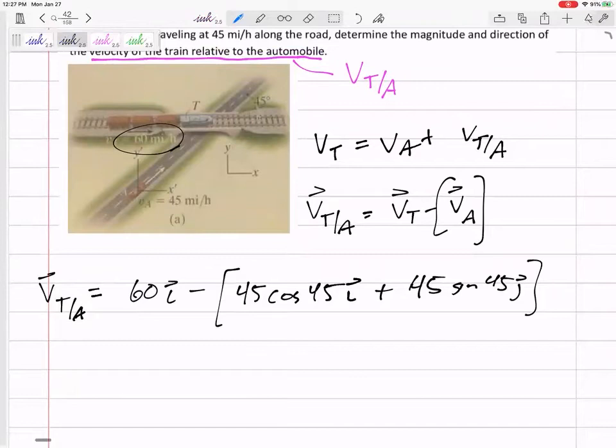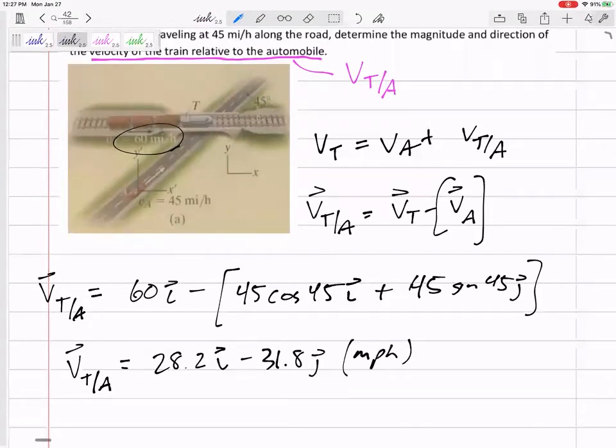This is just math, right? Put the I's together. Put the J's together. The velocity of T slash A would be 28.2 in the I minus 31.8 in the J. Need units, miles per hour. That minus, that just came from the math. I didn't have to consider it. The math, if you're drawing everything the right direction, then the math comes out.